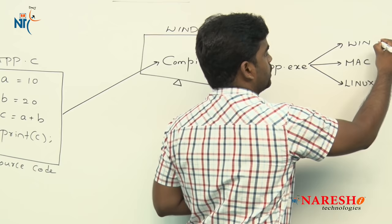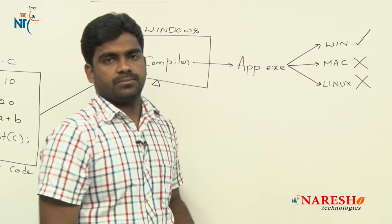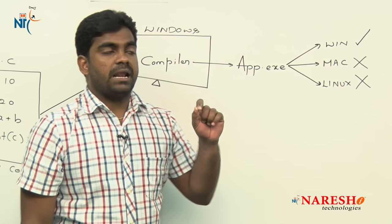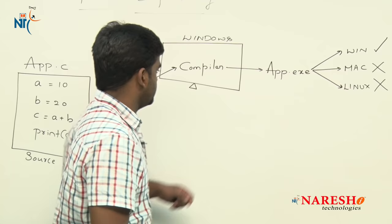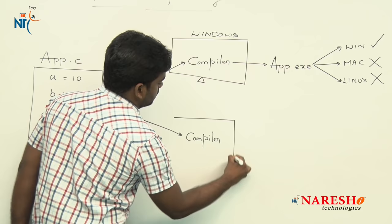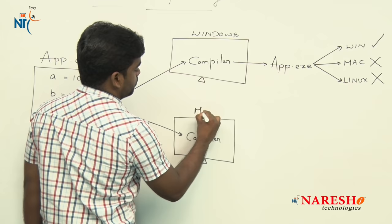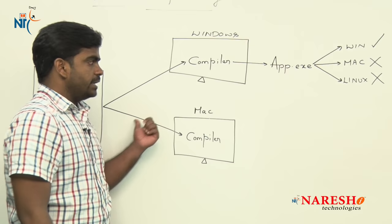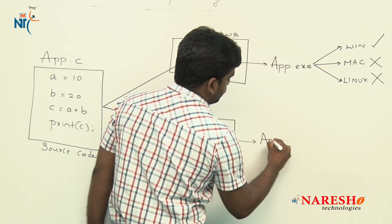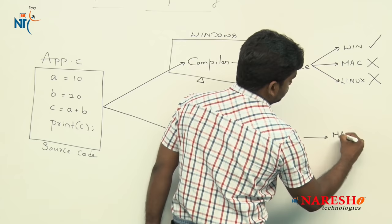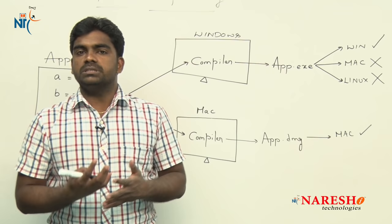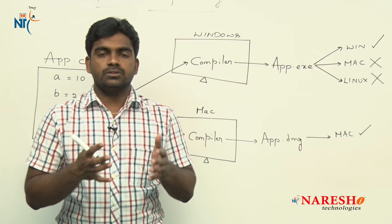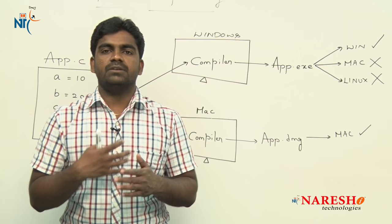You can run it only on Windows — you cannot run it on Mac or Linux. This is what we call platform dependency: on whichever platform you compile the application, on that same platform only you can run it. Now, if we pass the same source code to a compiler running on Mac, that compiler converts it into Mac-understandable instructions — generating app.dmz — and it can run only on Mac. Note that technically the compiler generates .obj files and the linker creates the .exe file internally; we will see the full C application life cycle in coming sessions.